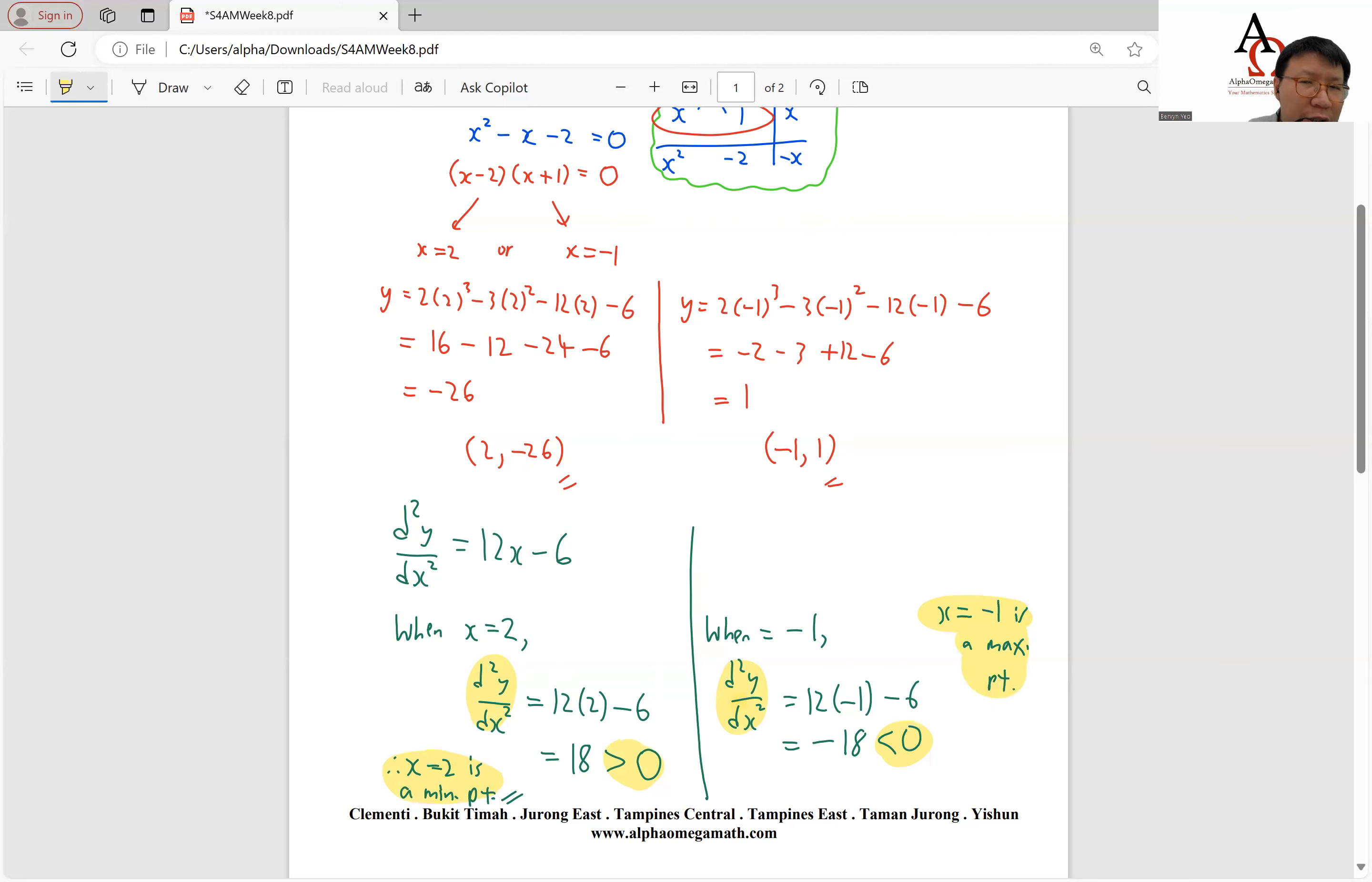So how this looks like visually in our curve will be that we may not be sure how the curve exactly looks like, but what we can do is to do a rough sketch. We know that there are two values, a negative 1 and a value at 2 as well. So which means that over here, at negative 1, there will be a maximum point. So the curve is probably something like this. Over here at negative 2, we will have a minimum point. So this point here is our negative 1, 1. This point here will be 2, negative 26.